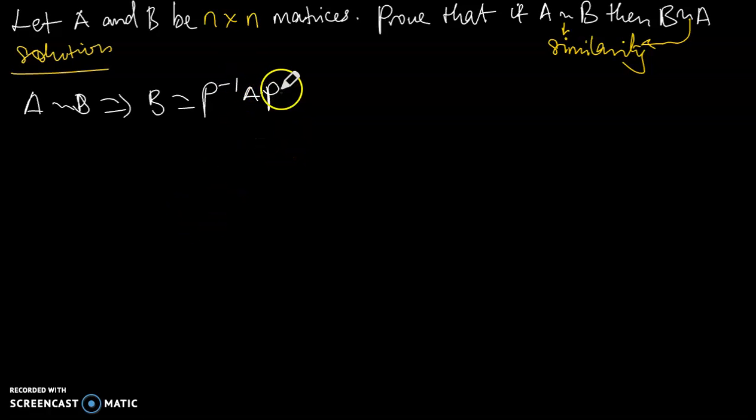And what this simply means is that we are going to have BP will be equal to AP. And if BP is equal to AP, this implies that B times P inverse will be equal to A.